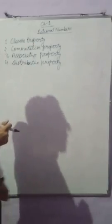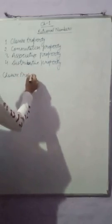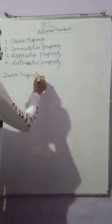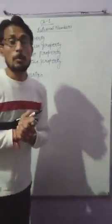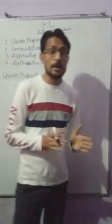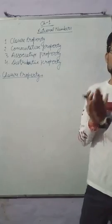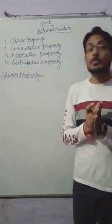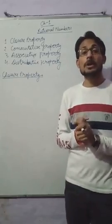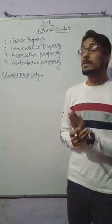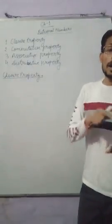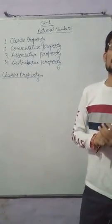First of all we will talk about closure property. What is closure property? In this property, if we add, multiply, subtract, and divide any two rational numbers or more, the result will always be a rational number. It means rational numbers are closed under addition, subtraction, multiplication, and division.